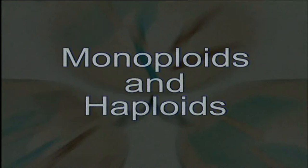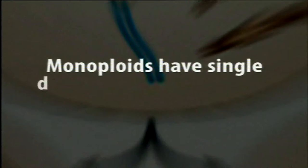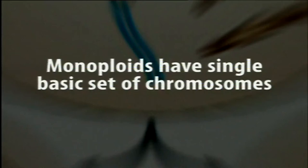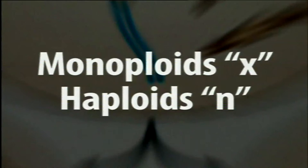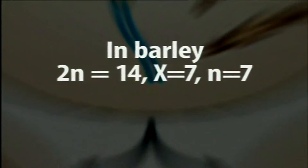Monoploidy is a condition where there is a single basic set of chromosomes in an individual, or a single genome set. Haploidy is a condition where there is half of the somatic chromosome number in an individual. The monoploid condition is designated by x, whereas haploidy is designated by n. In a diploid individual with 2n = 14, for example, the monoploid x will be equal to 7, and n will also be equal to 7.